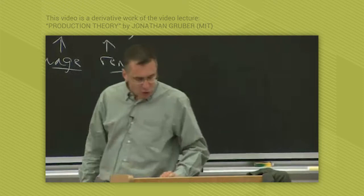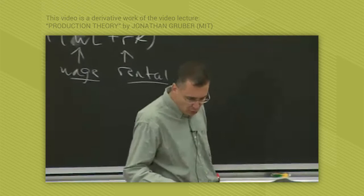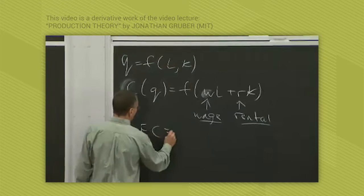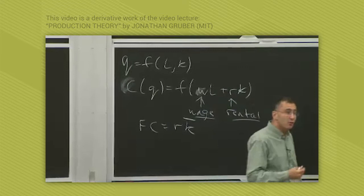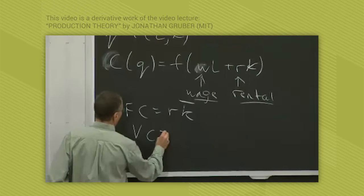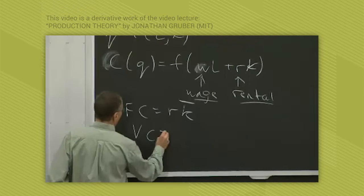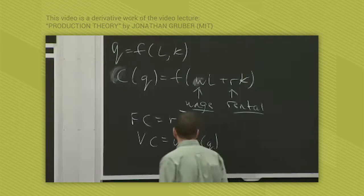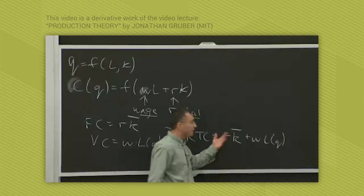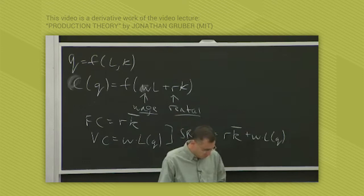Now, in the short run, capital is fixed. So in the short run, our fixed costs are R k bar. That's our fixed costs - the rental rate times the fixed amount of capital in the short run. And our variable costs are W times L, which is a function of Q. That is, the more you produce, the more labor you use in the short run. So total costs in the short run - short run total costs are R k bar plus W L of Q. K is not a function of Q, because K is fixed in the short run. But the amount of labor you use is a function of how much you produce.